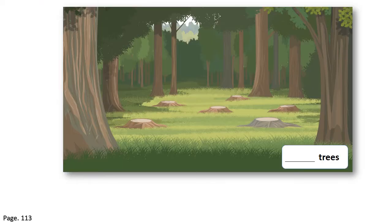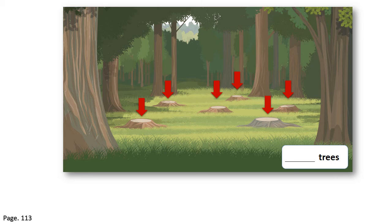Finally, let's move on to page 113 in our science book, where we can see a forest scene. In this scene, we will find out how many trees fell. Let's go ahead and count the tree stumps together: one, two, three, four, five, six — six trees fell.